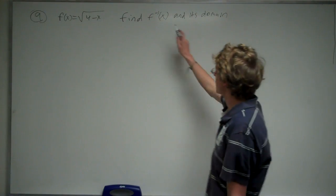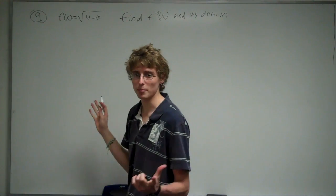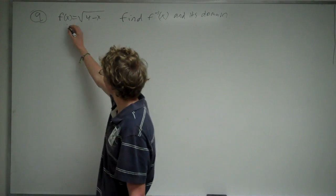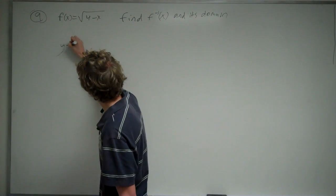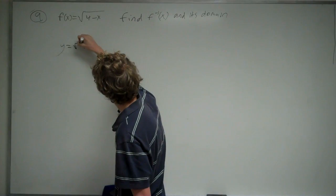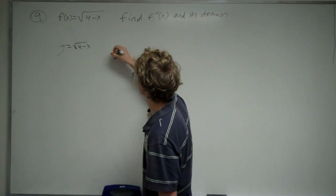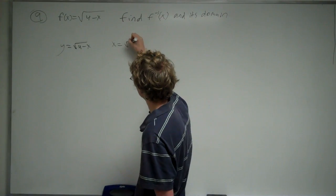Alright, so the inverse basically means you're going to flip the x's and y's. f of x is also known as y, so you can rewrite this as y equals √(4-x). Now you want to flip the x's and y's to find the inverse, so you're going to get x equals √(4-y).